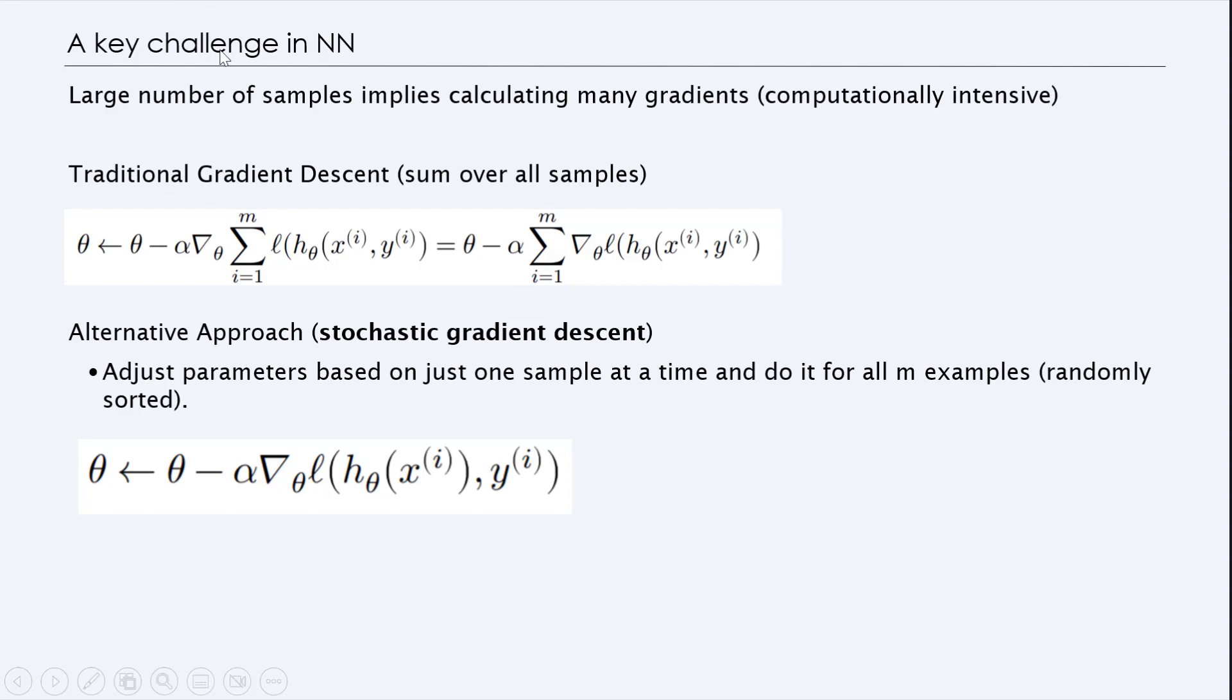So one of the key challenges in neural networks is that large number of samples implies calculating many gradients, computationally intensive, because you have many thetas. Now, if you think about the simple model in linear regression, we had h_theta(x) equals theta_0 plus theta_1 x. But now we have a lot of thetas because all the thetas are part of a matrix now. So the traditional gradient descent is sum over all the samples is computed by computing the next theta by taking the previous theta and multiplying by alpha, the learning rate, and the derivative with respect to theta for all the examples of the loss function here.